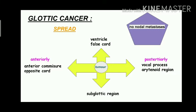Next, the spread of glottic cancer: upwards it can spread to the ventricle and the false vocal cord; anteriorly it can extend into the anterior commissure and from there to the opposite vocal cord; posteriorly to the arytenoid process and arytenoid region; and inferiorly to the subglottic region. A characteristic point is there is no nodal metastasis in glottic cancer, as the glottis is devoid of lymphatic drainage.